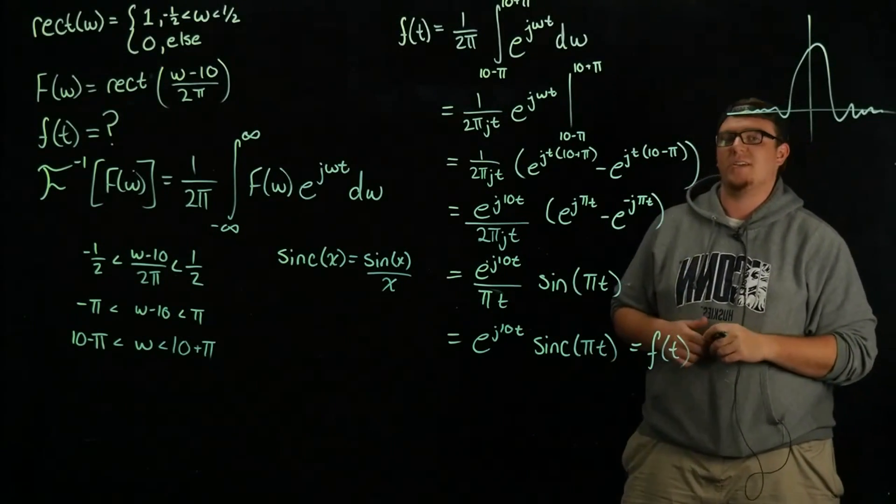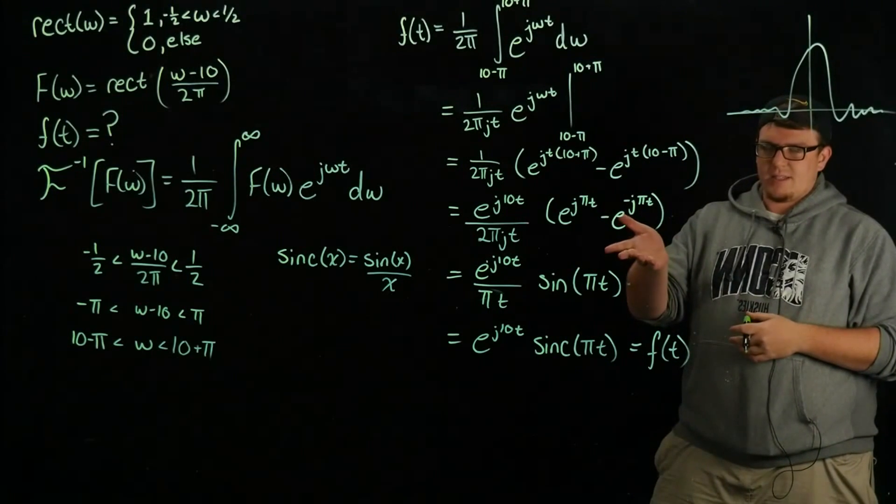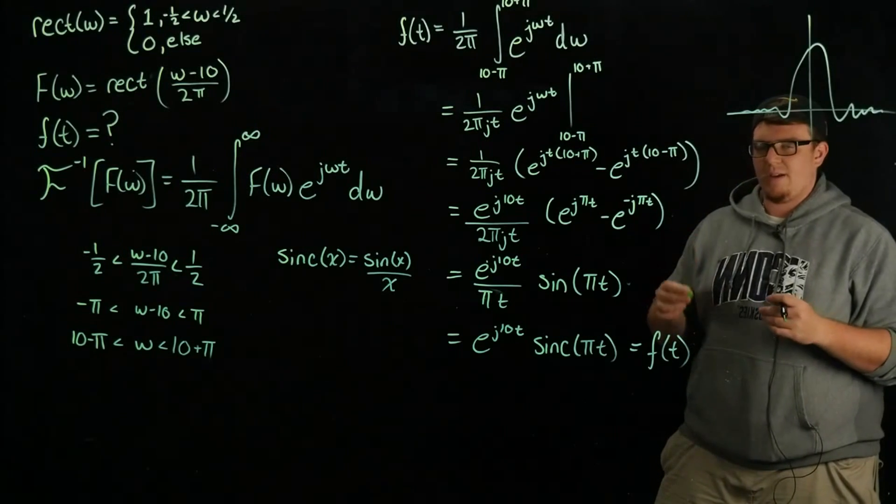And the reverse is true as well. The inverse Fourier transform of a sinc function gets you a boxcar. This is the long way to do it. Obviously you can use a table to evaluate these with some identities.